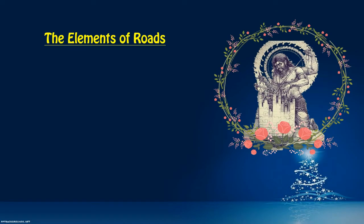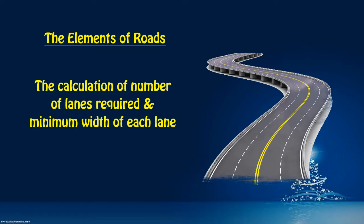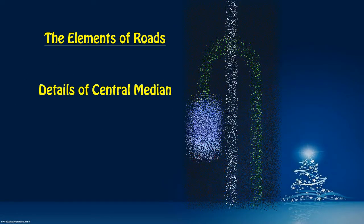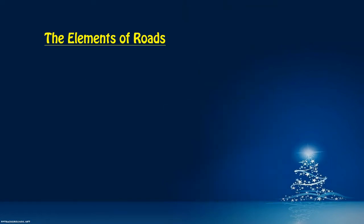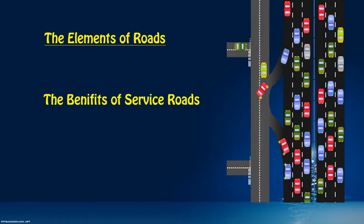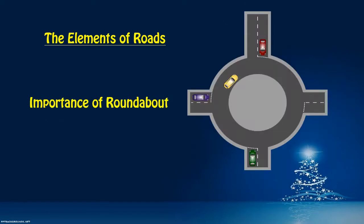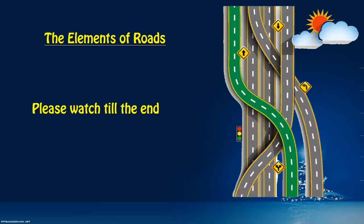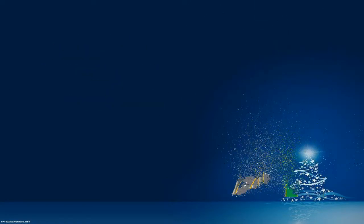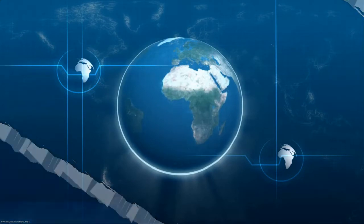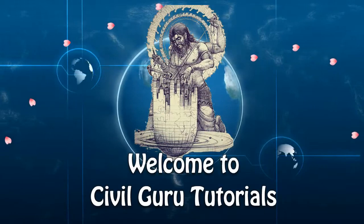In this episode we are going to see the elements of roads, such as how the number of lanes are calculated, the minimum lane width required, the details of central median, the benefits of service roads, the key role of T-junctions, and the importance of roundabouts. So please watch carefully till the end.